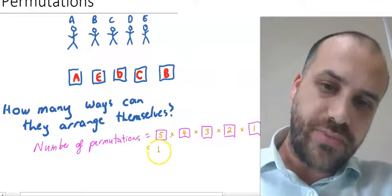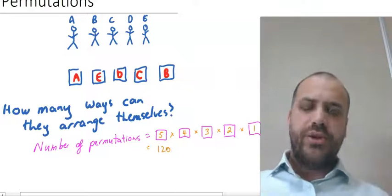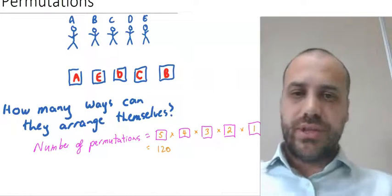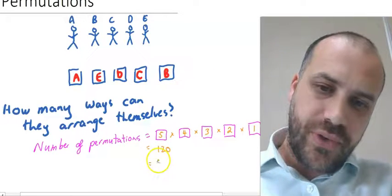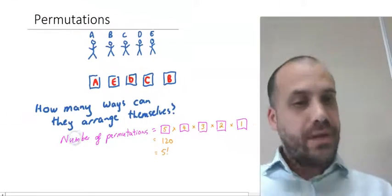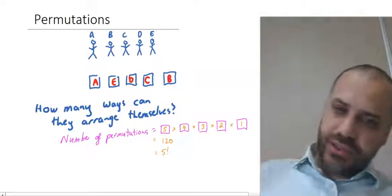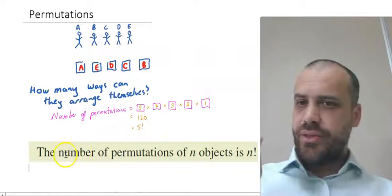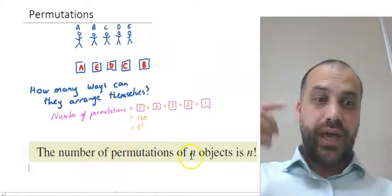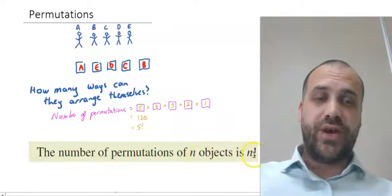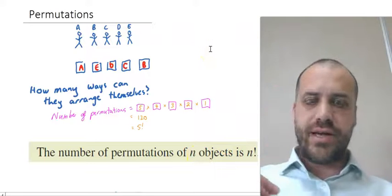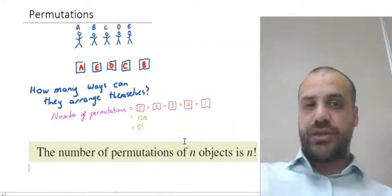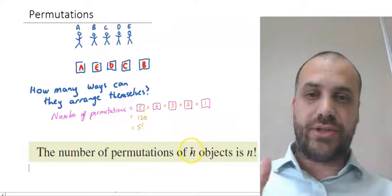That's 120. You should be looking at those five boxes — five times four times three times two times one — and realize that is also equal to five factorial. This is the connection between permutations and factorials. A bit of theory: the number of permutations of n objects is n factorial. If we had ten people trying to sit in ten desks, it would be ten factorial. A hundred people in a hundred desks would be a hundred factorial.